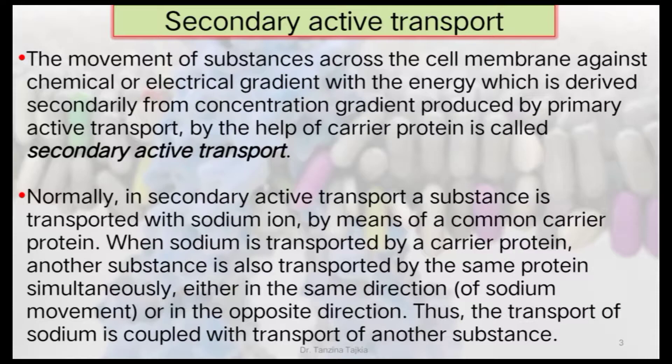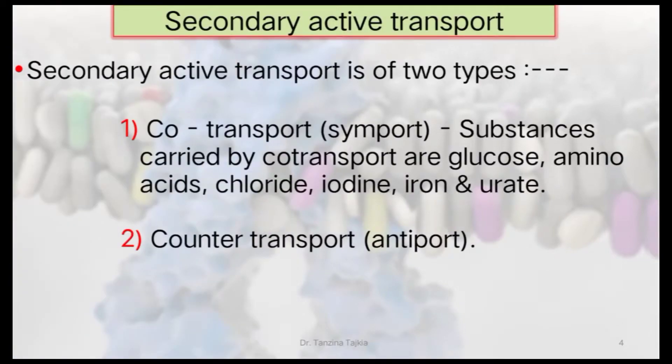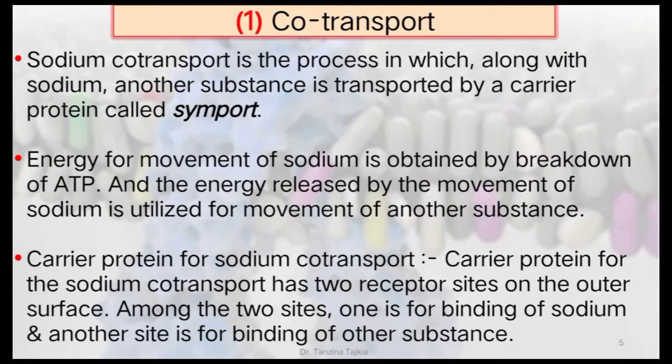The transport occurs either in the same direction or in the opposite direction. Thus the transport of sodium is coupled with the transport of another substance. Secondary active transport is divided into two types: co-transport and counter-transport. Co-transport, also called symport, is the process in which along with sodium, another substance is transported by a carrier protein. Energy from the movement of sodium is obtained by breakdown of ATP.